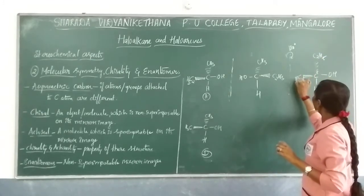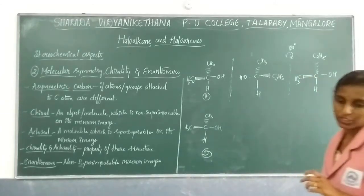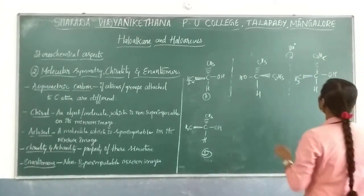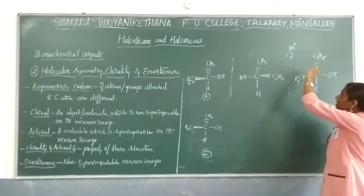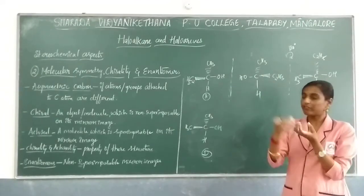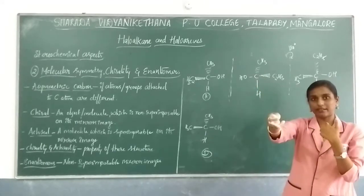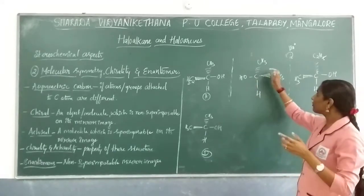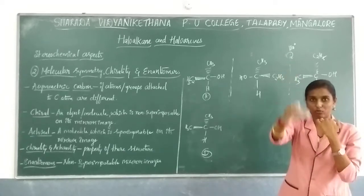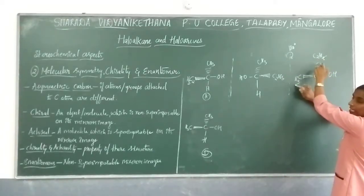And here C3H3. The structure will be seen in this way. This is your wedge (front viewer) and this is your dash (back viewer). After the 180-degree rotation, the structure goes like this. You can write it with H, and this is on the plane.